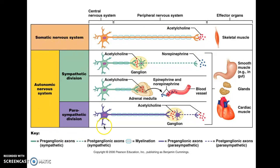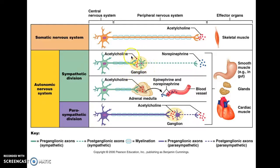Below the somatic pathway we have three depictions of the autonomic nervous system — two related to the sympathetic division and one to the parasympathetic. In the sympathetic division, neurons have cell bodies in the central nervous system, but instead of sending an axon directly to the effector, the axon travels to a ganglion — a collection of cell bodies — where it synapses with a second neuron. That second neuron then sends its axon out to the effector, using norepinephrine as the neurotransmitter.